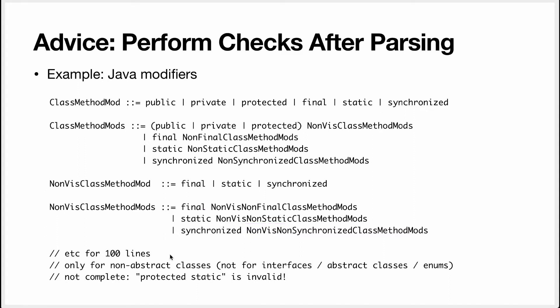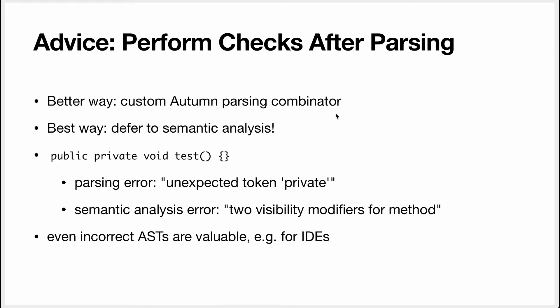This only works for non-abstract classes — interfaces have other constraints, and abstract classes have other constraints. It doesn't even really work for normal classes, because for instance it does not prevent 'protected static,' which is invalid in Java. So this is something you should validate in semantic analysis and not in the parser. You could write a custom parsing combinator that would work, but honestly, don't do that. Just defer it to semantic analysis if you can.